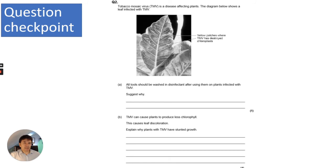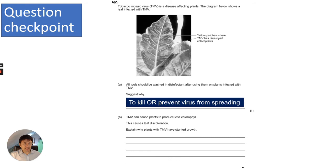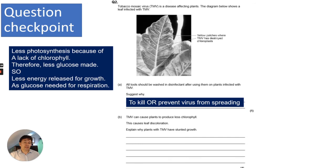TMV shows yellow patches on leaves where it has destroyed the chloroplasts. All tools should be washed in disinfectant after use on TMV-infected plants to kill or prevent the virus from spreading. For the four-mark question on why plants with TMV have stunted growth: TMV causes a lack of chlorophyll, leading to less photosynthesis, therefore less glucose is made, so less energy is available for growth or respiration.